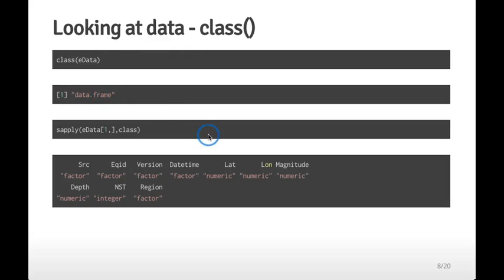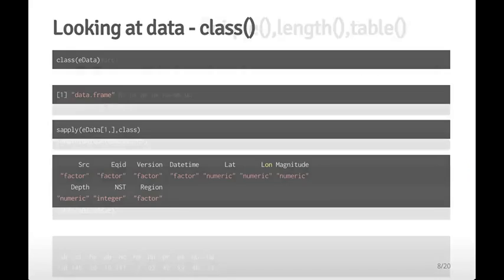To check the class of each individual column, you select the first row of the data frame — the comma syntax in R selects rows before the comma and columns after it. Then you apply sapply() with the class function to every element of that first row. We see that the source and earthquake ID variables come back as factors, while latitude, longitude, and magnitude are numeric — all as expected. This is another way to determine whether data was loaded properly.